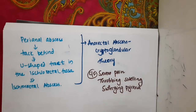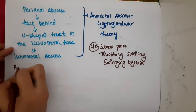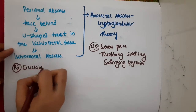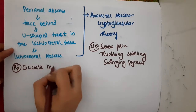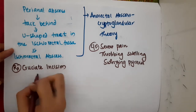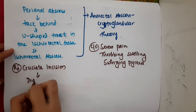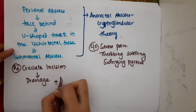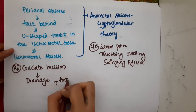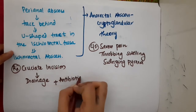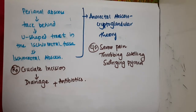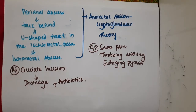For treatment, a cruciate incision should be given first, followed by drainage of the abscess. Along with drainage, antibiotic coverage should also be given to the patient. This concludes the topic of anorectal abscess.